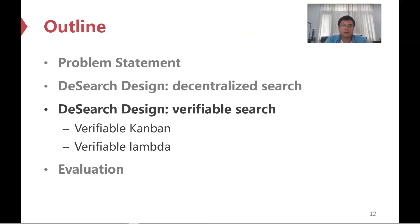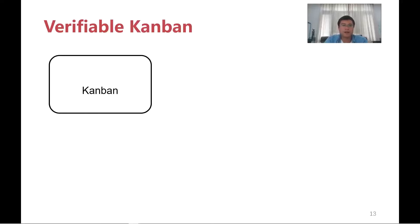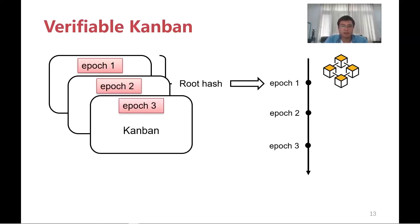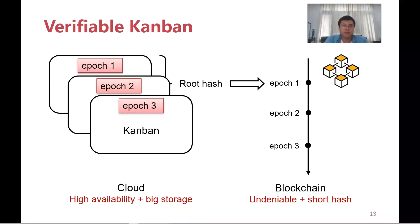To detect dishonest behavior, we then describe how D-Search ensures verifiable search in terms of verifiable Kanban and verifiable Lambda, respectively. How can we make cloud-based Kanban verifiable? We divide Kanban content into epochs. For each epoch, we calculate a root hash and commit it to the blockchain. Any user can use the on-chain hashes to verify the Kanban contents from a particular epoch. This design reuses existing cloud and blockchain infrastructures. Cloud offers big, cheap storage with high availability, while blockchain provides undeniable proofs for Kanban content. A short hash minimizes on-chain storage costs, and the epoch-based operations avoid expensive blockchain interactions.